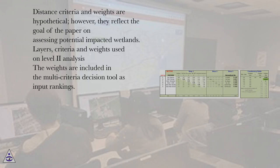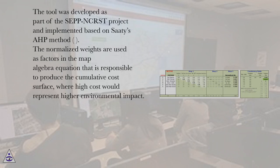The tool was developed as part of the SEPP-NCRST project and implemented based on Saaty's AHP method. The normalized weights are used as factors in the map algebra equation that is responsible to produce the cumulative cost surface, where high cost would represent higher environmental impact.